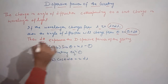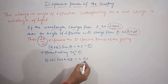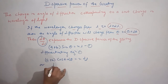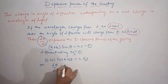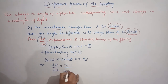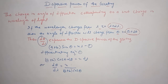We need to isolate d-theta by d-lambda. So this expression gives us: d-theta by d-lambda equals n upon (a + b) cos theta.